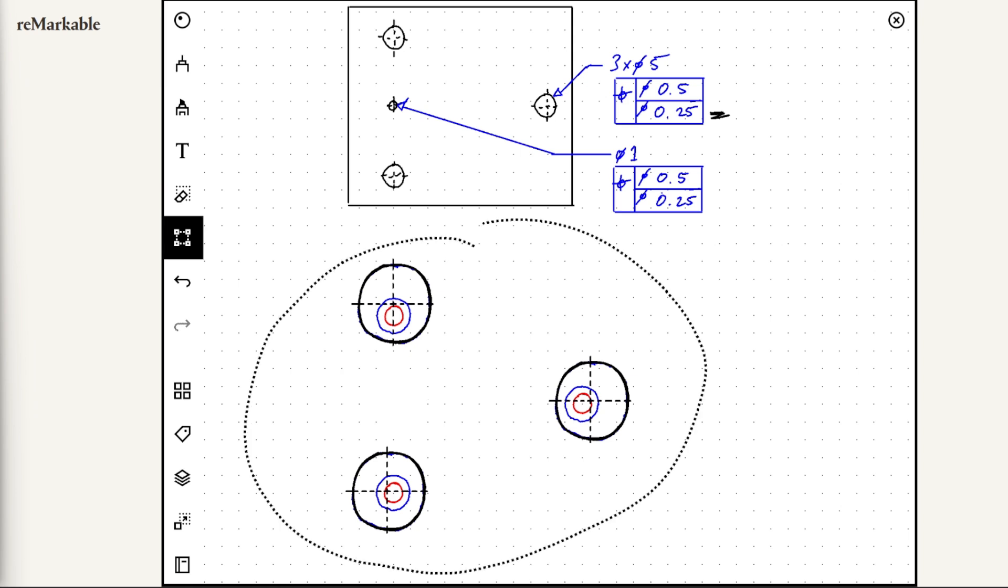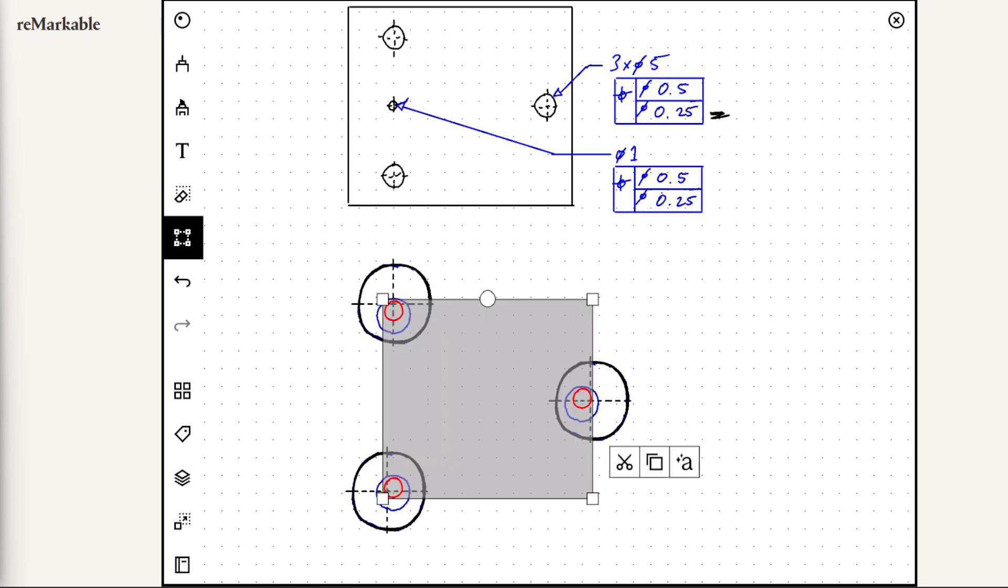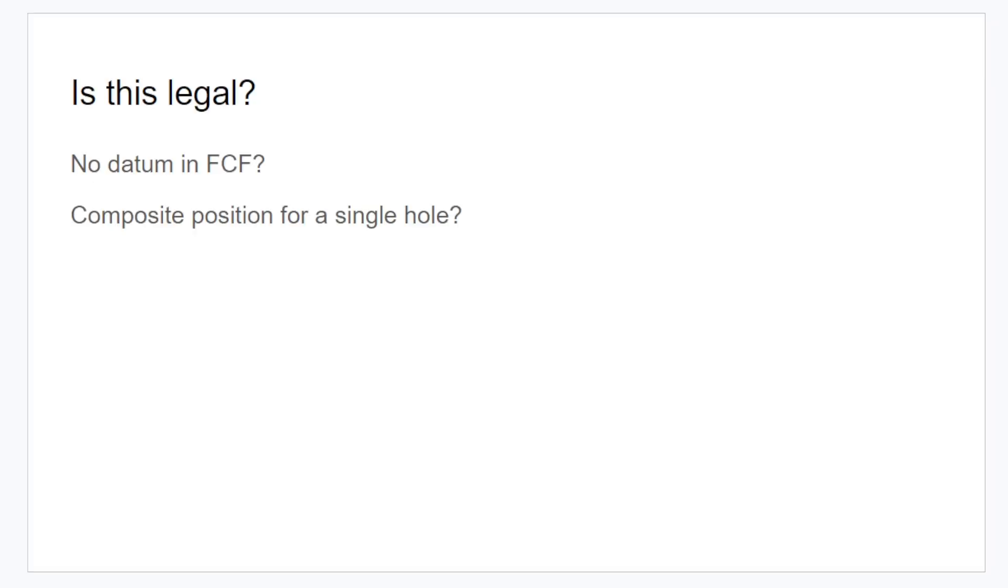We can actually just move this upper segment up like that. And then the other thing that it can do is it can actually rotate, assuming that there is not a datum feature in this segment that prevents rotation. So, under the legality of this, I think there's two things that I see as jumping out to people as possibly not allowed in the standard.